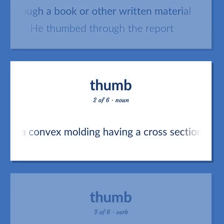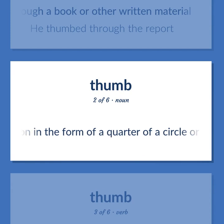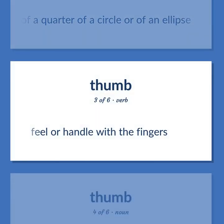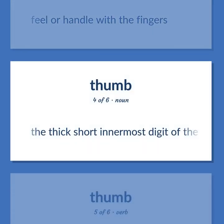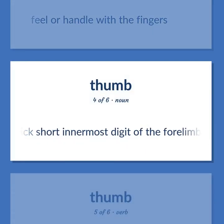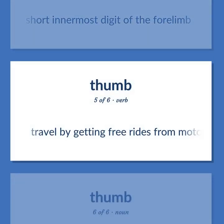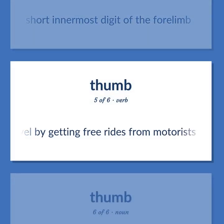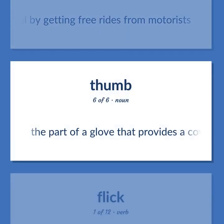Thumb: A convex molding having a cross section in the form of a quarter of a circle or of an ellipse. Feel or handle with the fingers. The thick short innermost digit of the forelimb. Travel by getting free rides from motorists. The part of a glove that provides a covering for the thumb.